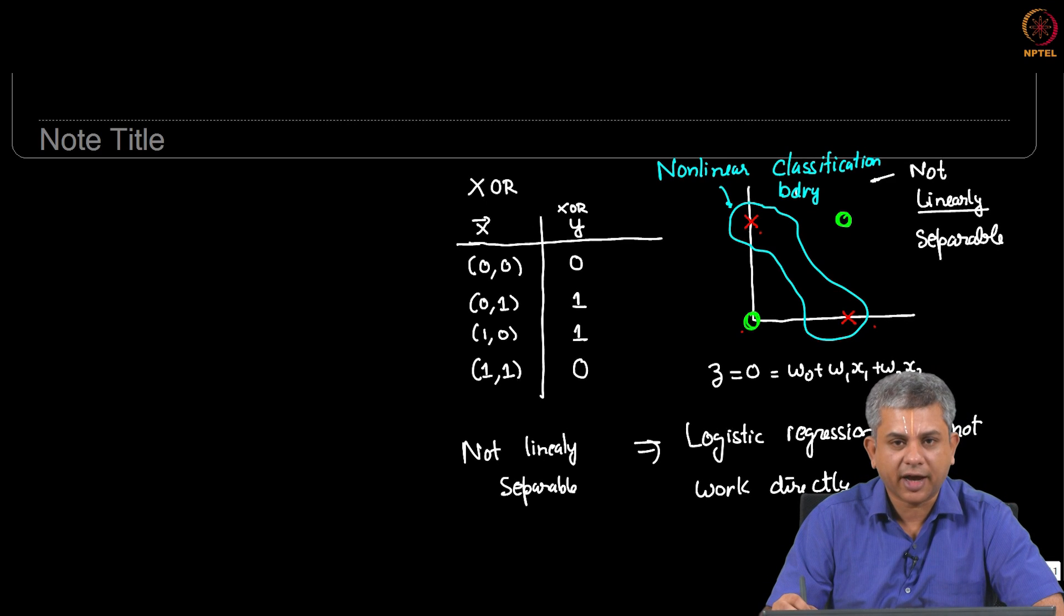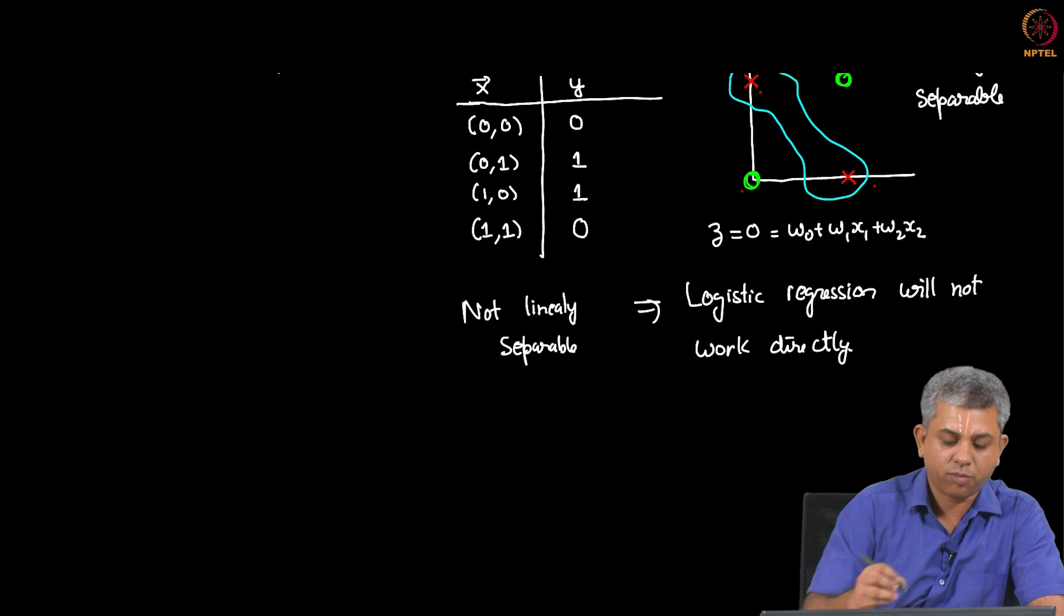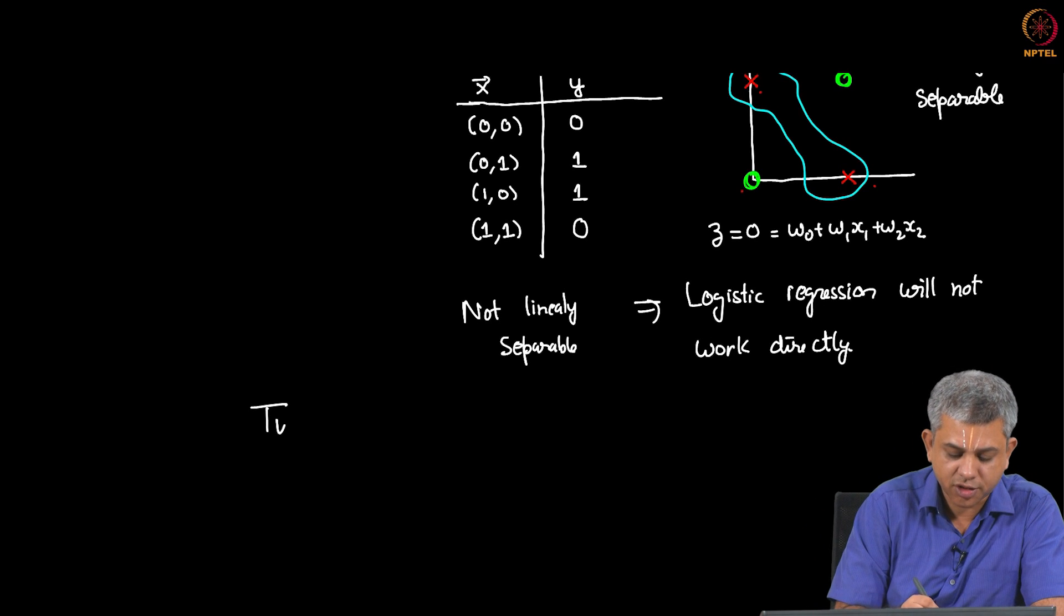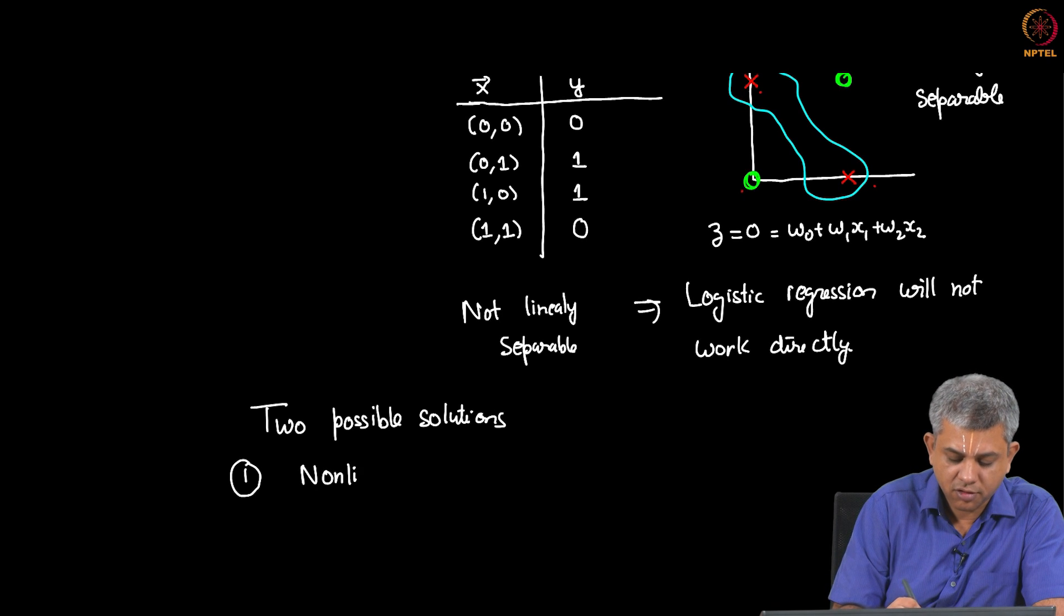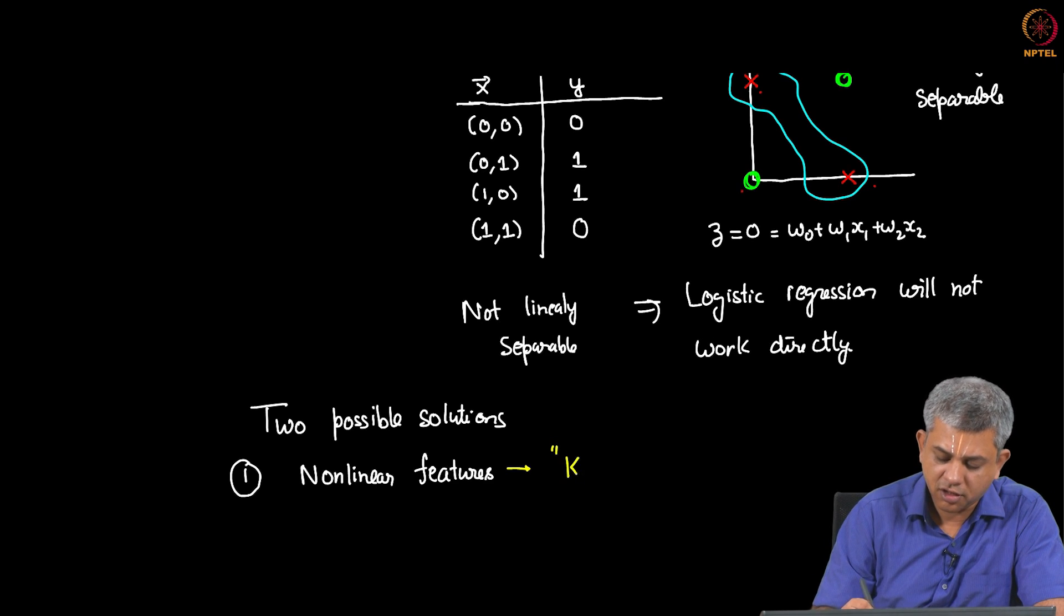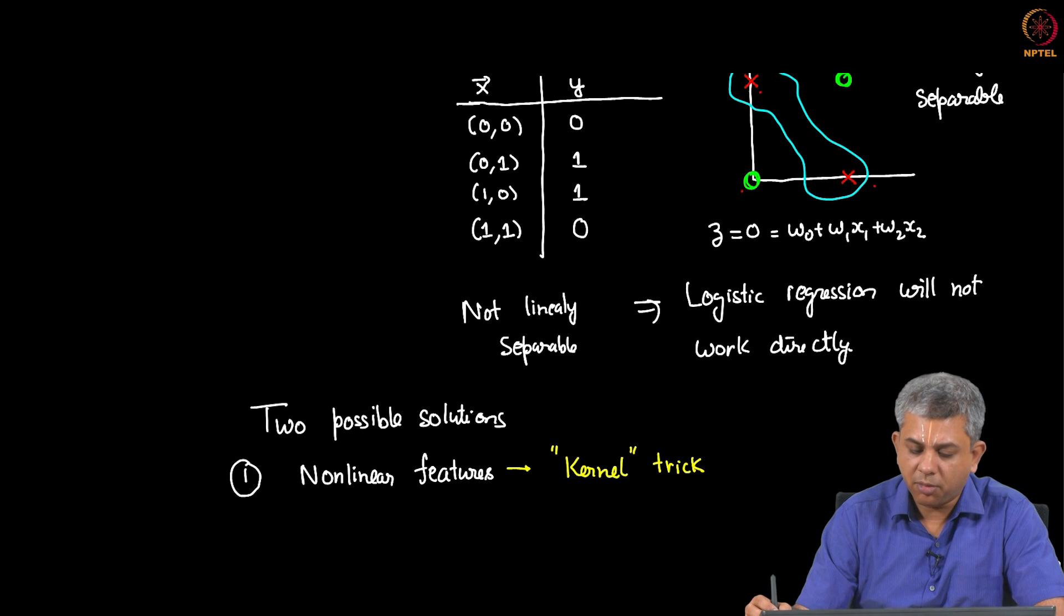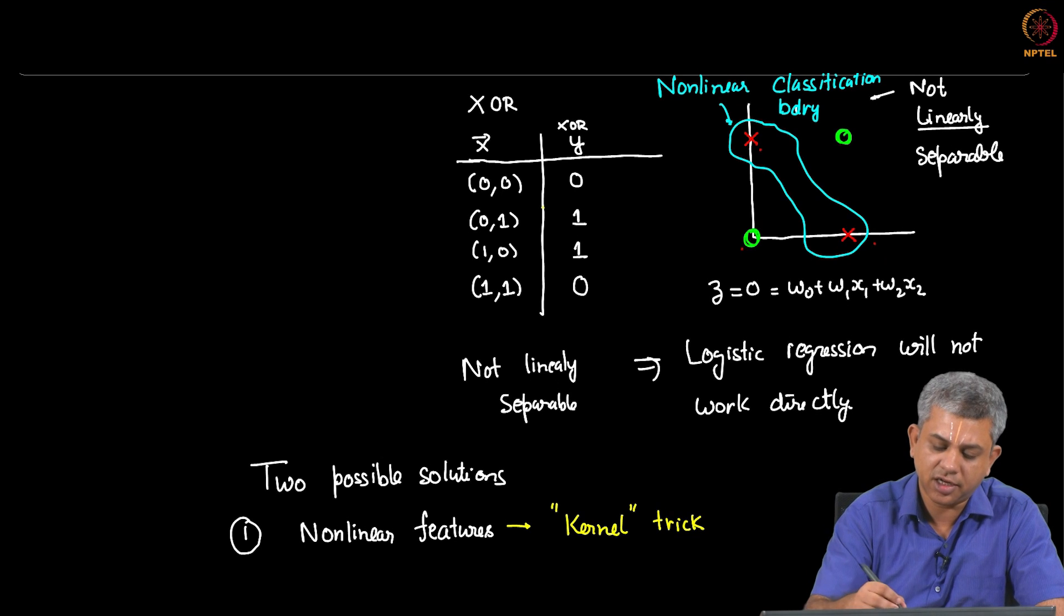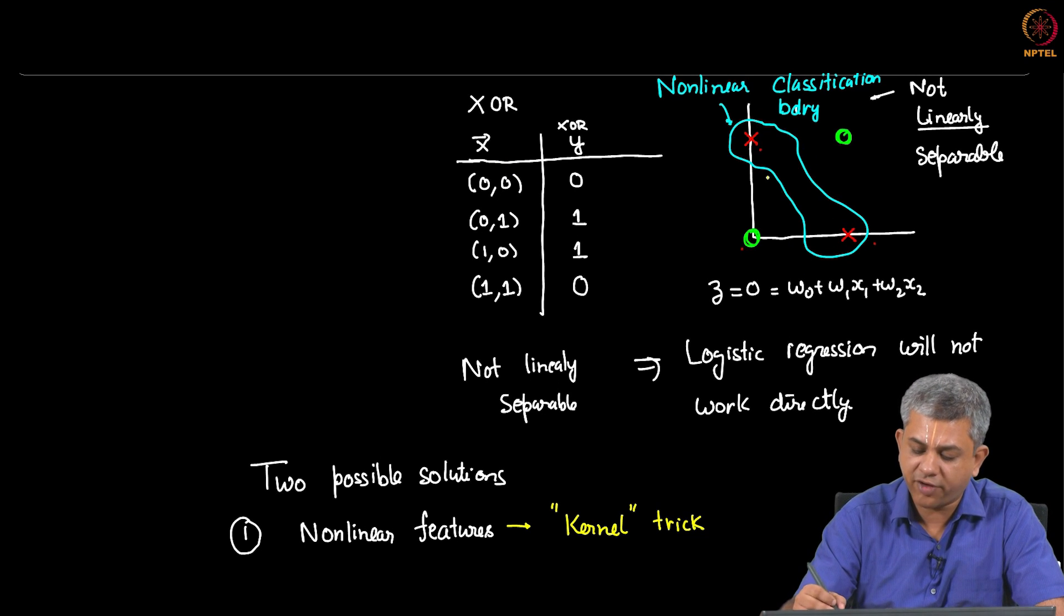However we will see that one simple trick actually makes it work. Let me now talk about how this problem can be solved. There are two possible solutions to the XOR problem. The first is to use non-linear features. You have to be a little bit careful with how you use non-linear features. We will see later on in the course this kind of idea uses something called the kernel trick. But very simply you will have to start using other factors rather than just X1 and X2 in order to create a new boundary whose classification boundary would actually be a non-linear function of X1 and X2 and not just a linear function.